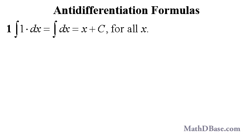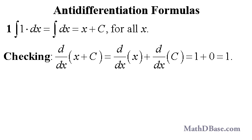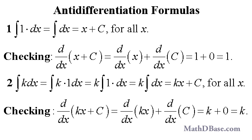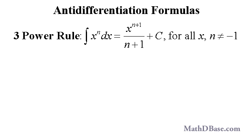Antidifferentiation formulas take the guesswork out of the process of finding antiderivatives. The antiderivative of 1 is x plus c; checking by differentiating, the derivative of x plus c is 1. The antiderivative of any constant k is kx plus c; checking, the derivative of kx plus c is k. The power rule states that the antiderivative of x to the n is x to the n plus 1 over n plus 1 plus c, valid for all x provided that n is not equal to negative 1. If n equals negative 1, the formula gives a 0 in the denominator, which will be addressed in another video in this series.